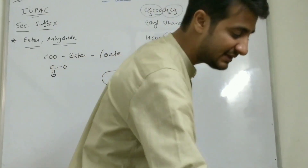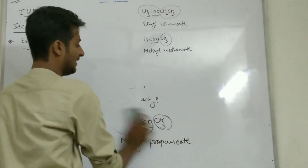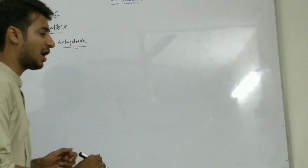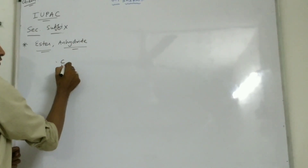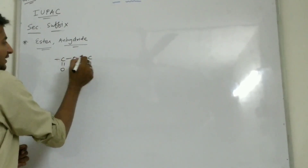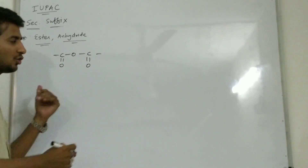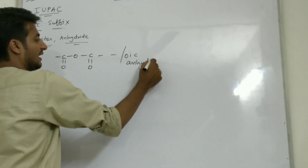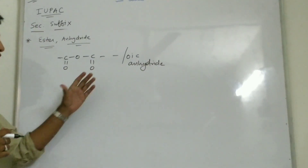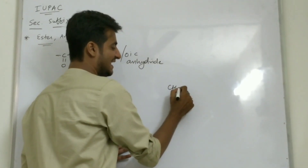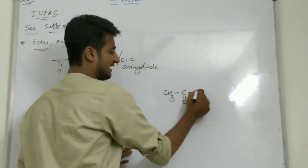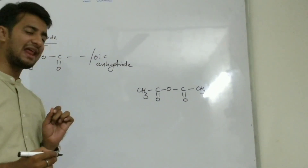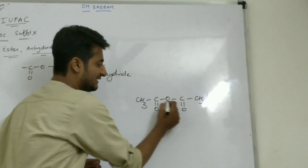Now another important group is anhydride. Similar to ester, it has a different technique. The functional group is C double O — O — C double O, and this is considered the anhydride group. It has the suffix 'oic anhydride'. For the nomenclature of this compound: CH3 — C double O — O — C double O — CH3. In this anhydride, you have to see where the oxygen is.